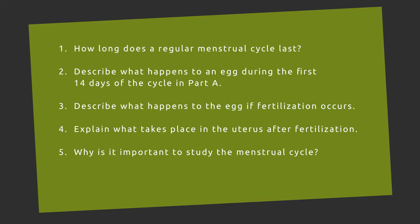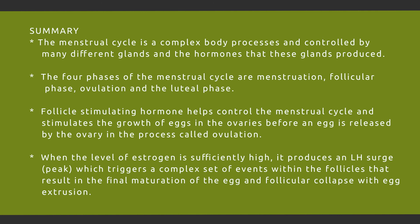The guide questions are: How long does a regular menstrual cycle last? Describe what happens to an egg during the first 14 days of the cycle. Describe what happens to the egg if fertilization occurs. Explain what takes place in the uterus after fertilization. And why is it important to study the menstrual cycle? Your work will be graded using the scoring rubric found in your learning activity sheet.